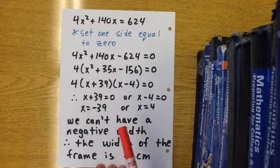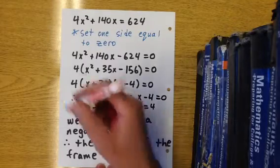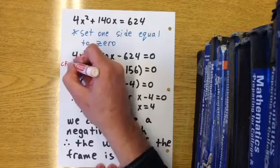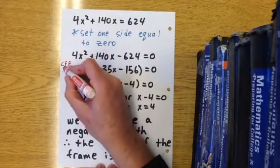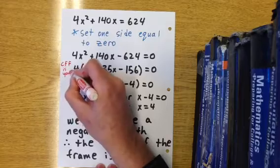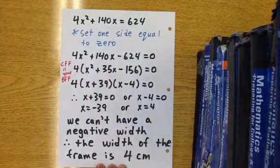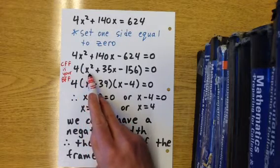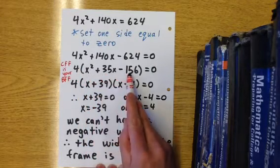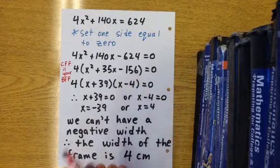Don't forget, you always want to common factor first in this situation. Common factor first, CFF - CFF is your BFF. So make sure you common factor first each time. Common factoring out that 4, we're left with x squared plus 35x minus 156.